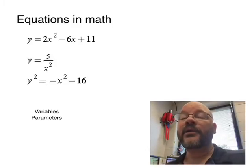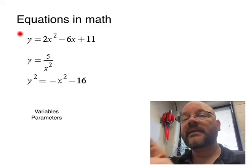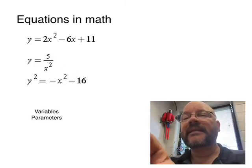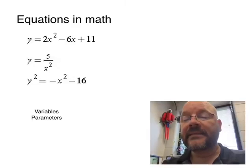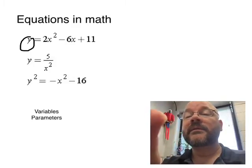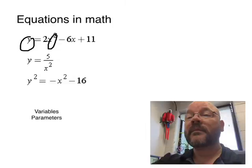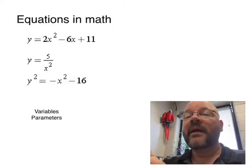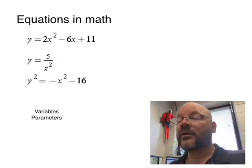Here are how you would normally see equations in your math classes — like this one here, here, and here. Normally in math class you see something like here's a variable, and here's another variable. So we might say in this case that we had two variables like that. But what do you call the other things? What do we call the 2 and the 6 and the 11? We're going to call them parameters.